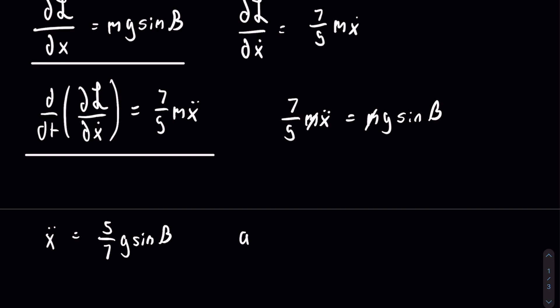x double dot is just the linear acceleration, so we can rewrite it as a is equal to five-sevenths g sine of beta. That is all for this video. I hope you enjoyed. Next video, we will find the equation of motion for a stick falling while attached to a pivot. Thank you for watching. Bye.